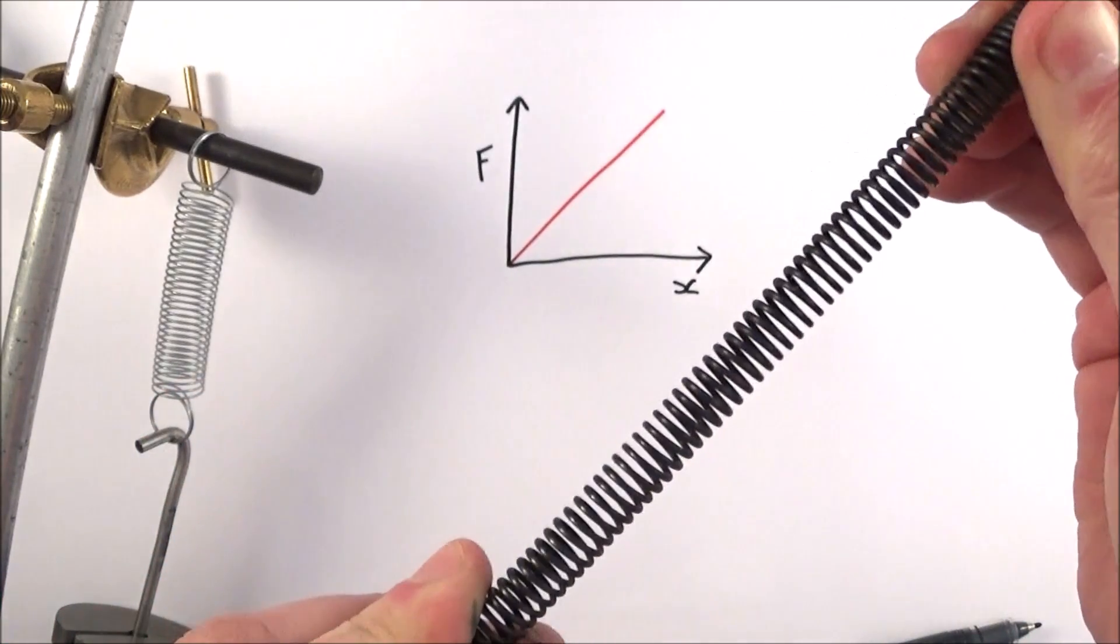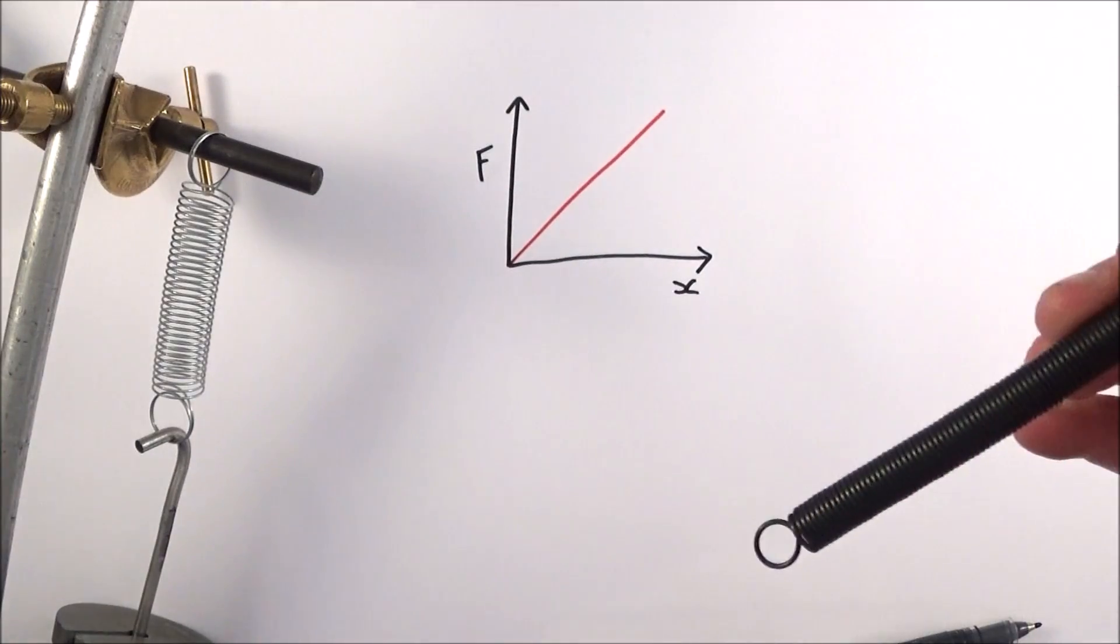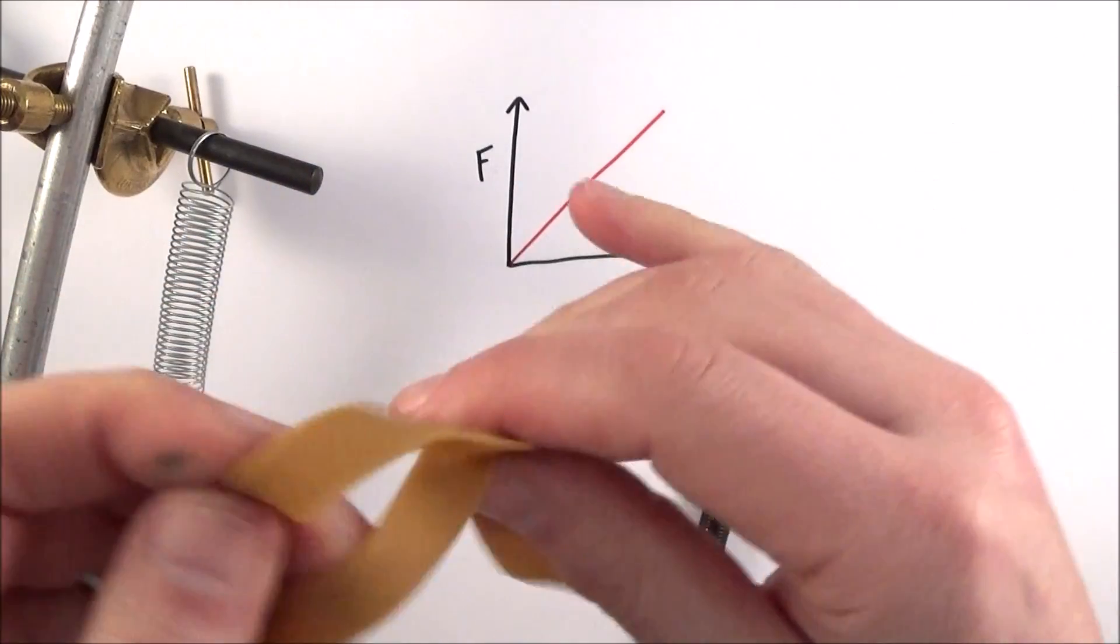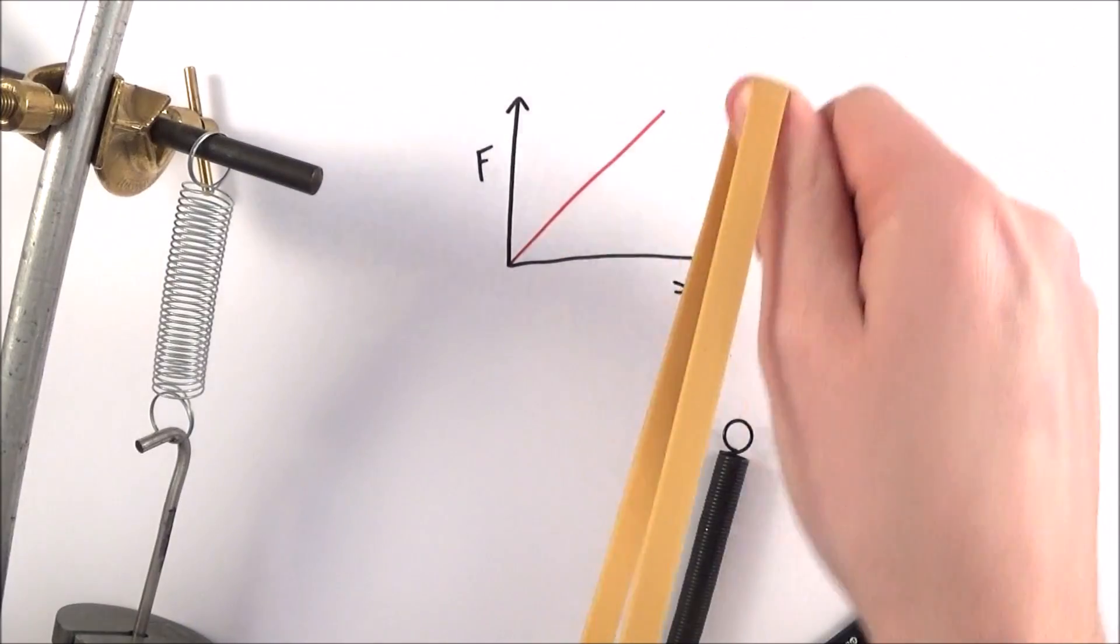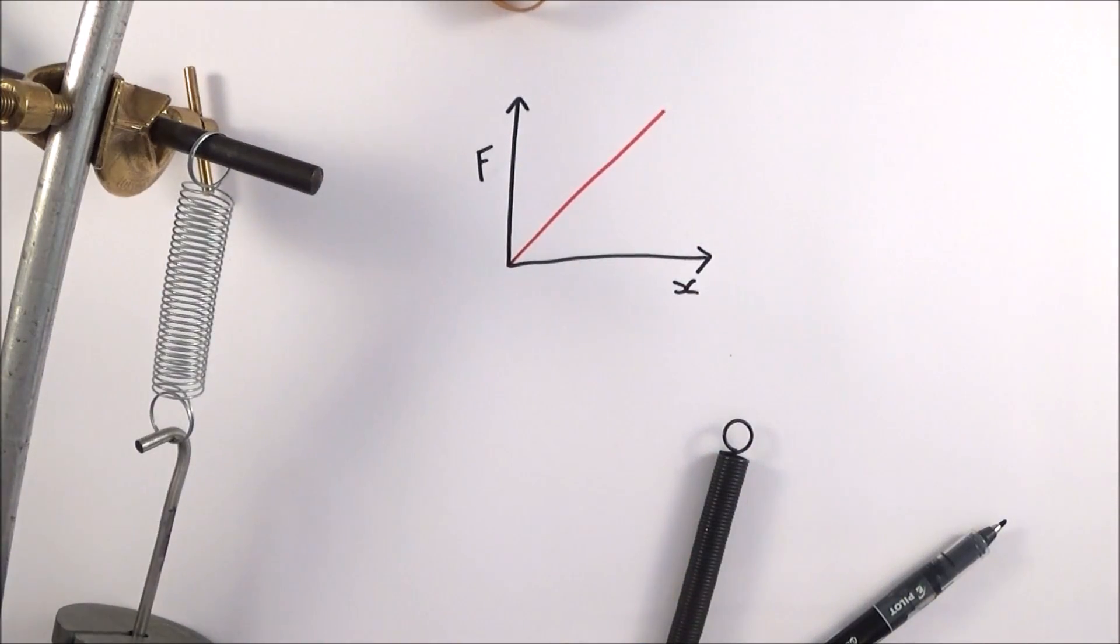And the more I stretch it, the more energy it's stored, just like if you have a rubber band. With a rubber band, you pull it back, and then it stores lots of elastic potential energy, which we can then release.